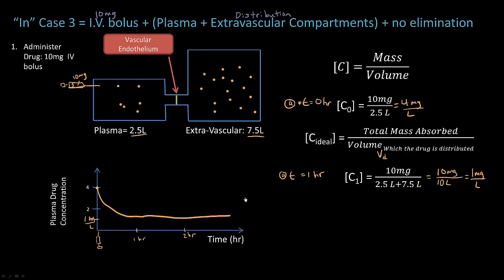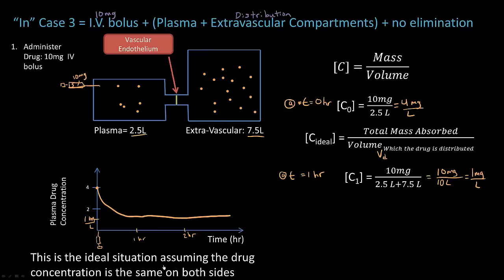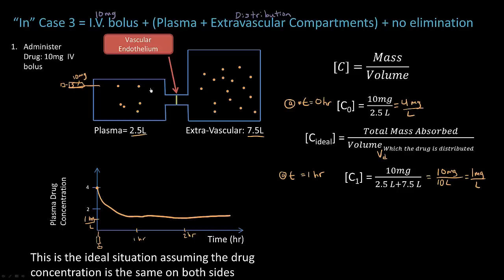Remember, this is the ideal situation — we assumed the drug concentration is the same on both sides and that there is no elimination occurring. But we know we don't always deal with this ideal situation, and the drug concentration is not always the same on both sides. Because of this, we have the term called volume of distribution.